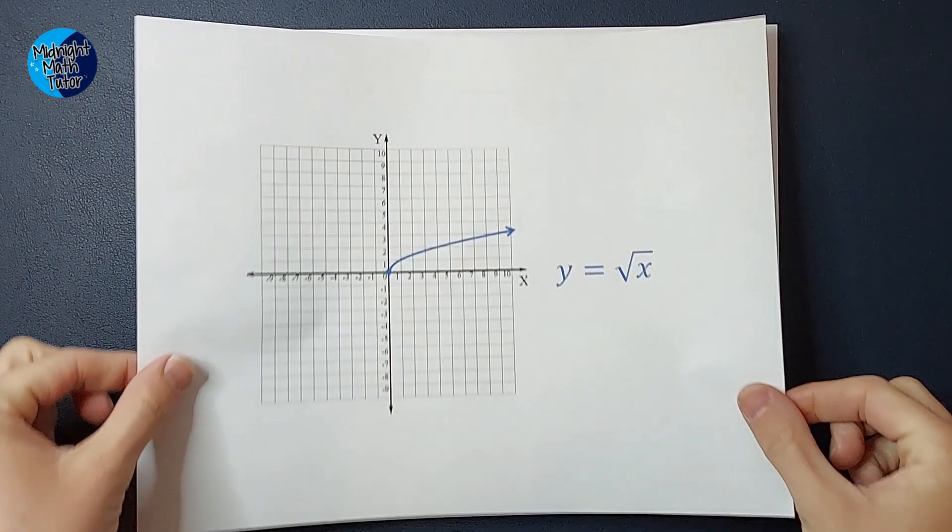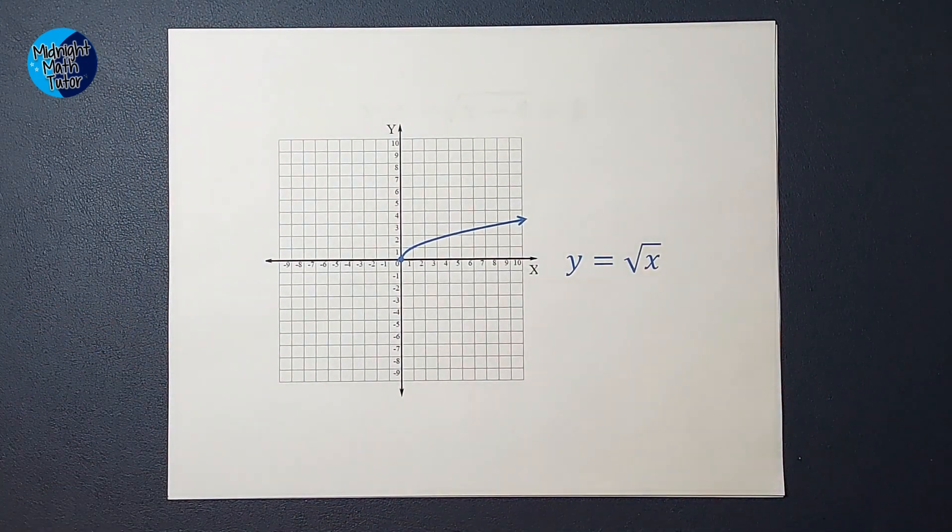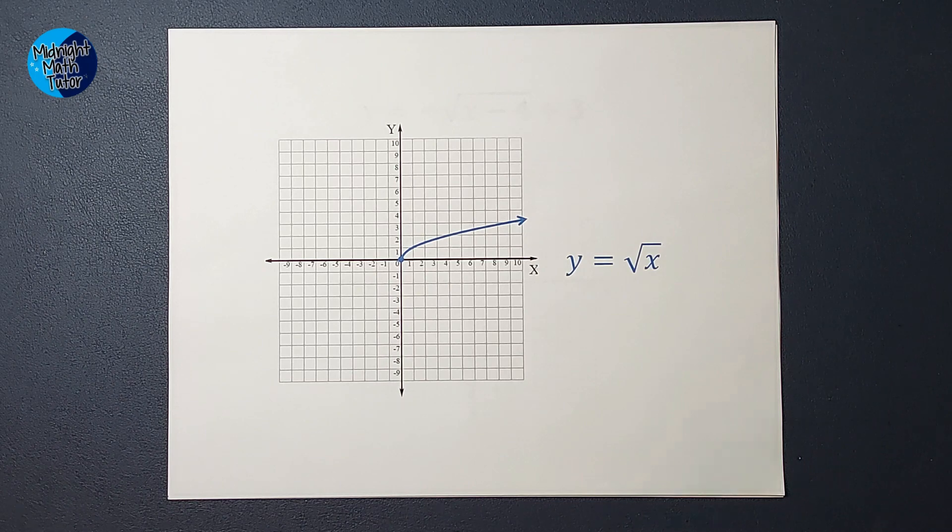So when graphing something like this, we have something we like to call a parent graph. So if I were just being asked to graph y equals the square root of x, this is what my graph would look like.